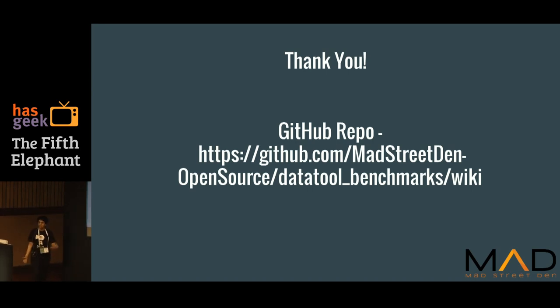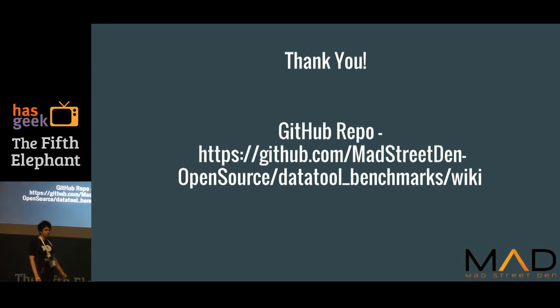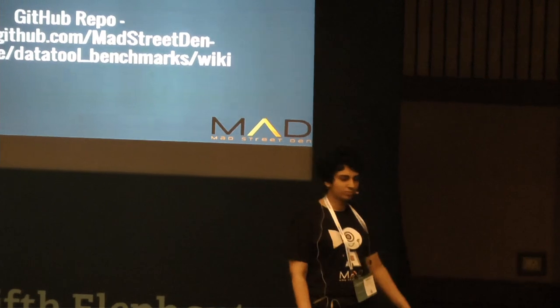Very good talk. One question about Spark — the graph shown for Spark DataFrames and RDDs, did you do in-memory caching before running those operations? Yes, there was caching involved and it was in-memory. And one more question — does Amazon Redshift work on Hadoop? So Redshift is a different kind of framework in itself — it's not Hadoop-based.